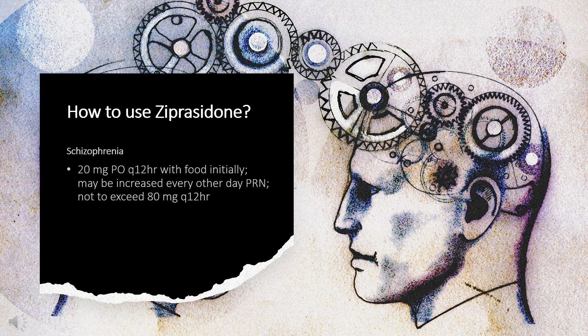How to use Ziprasidone: For schizophrenia, 20 mg PO Q12HR with food initially, may be increased every other day as needed, not to exceed 80 mg Q12HR. Periodically assess need for maintenance; clinical trials have documented no added benefit above 20 mg Q12HR. For acute agitation with schizophrenia (IM): 10 mg Q2HR or 20 mg Q4HR, not to exceed 40 mg per day. Use IM for up to 3 days and switch to PO if continuing past this time.